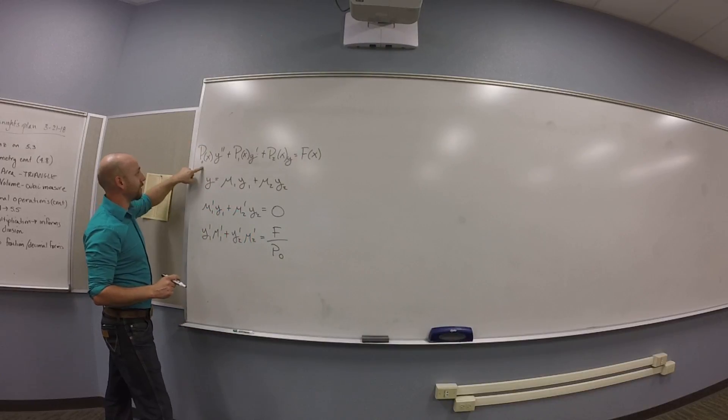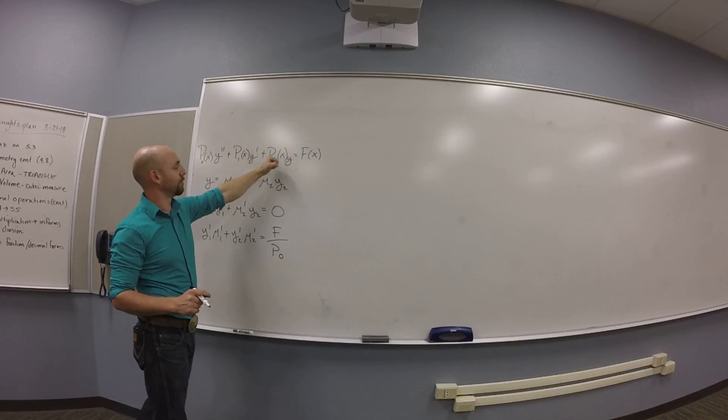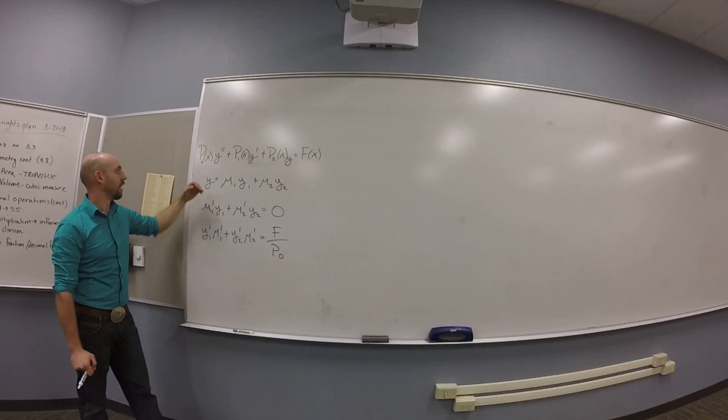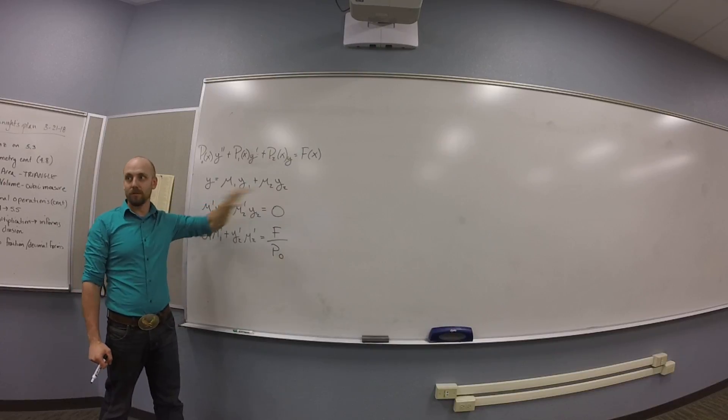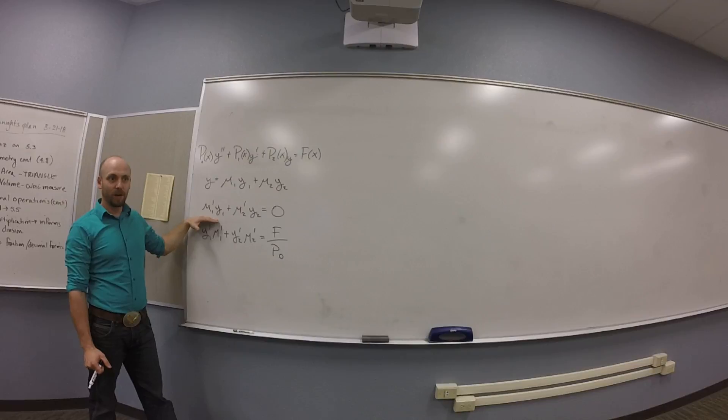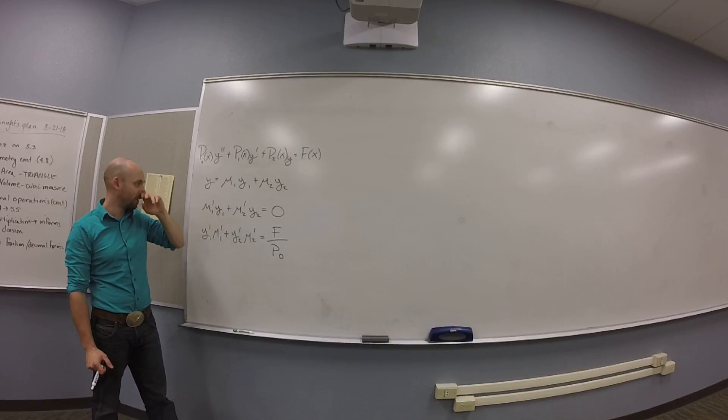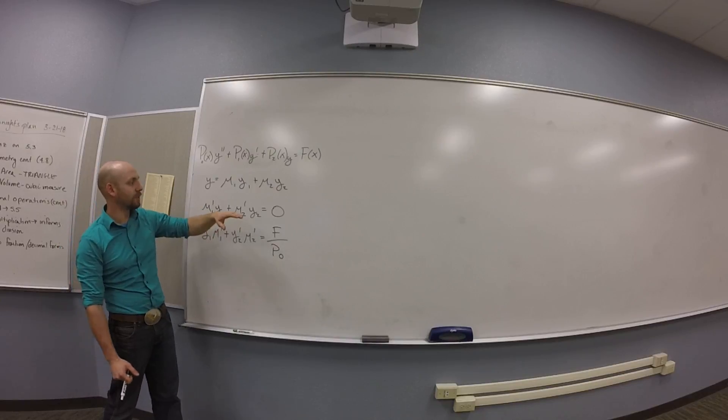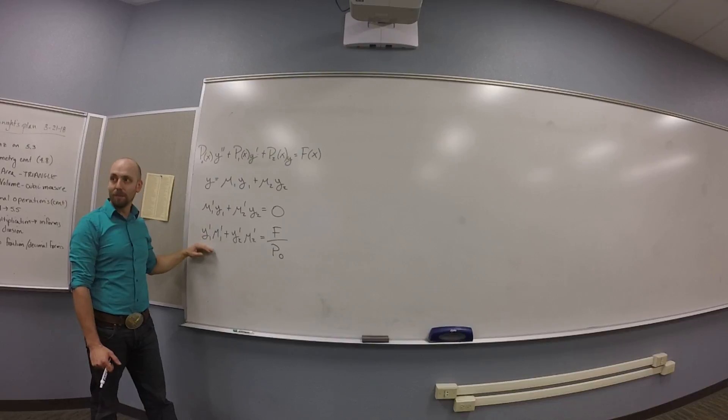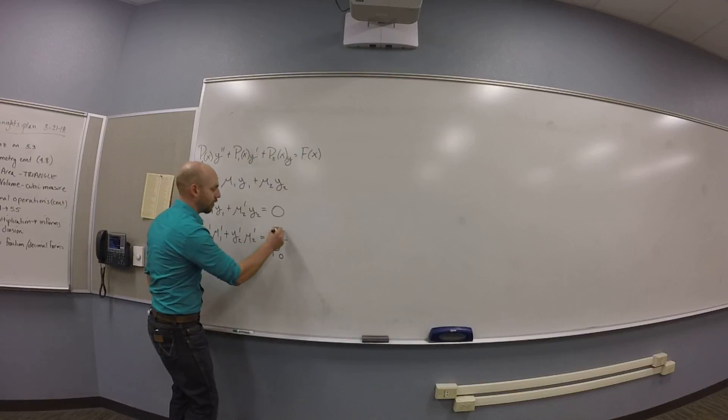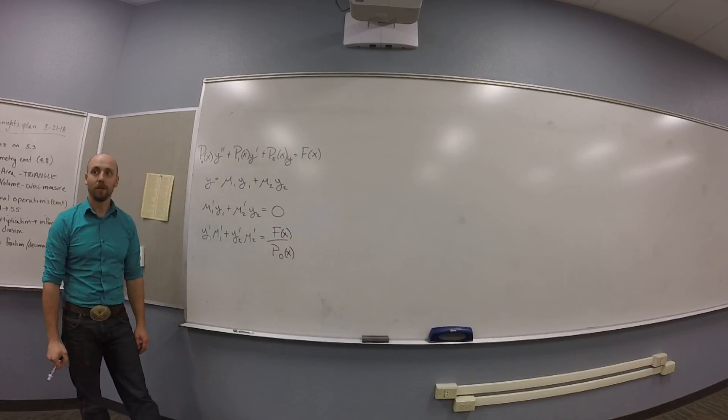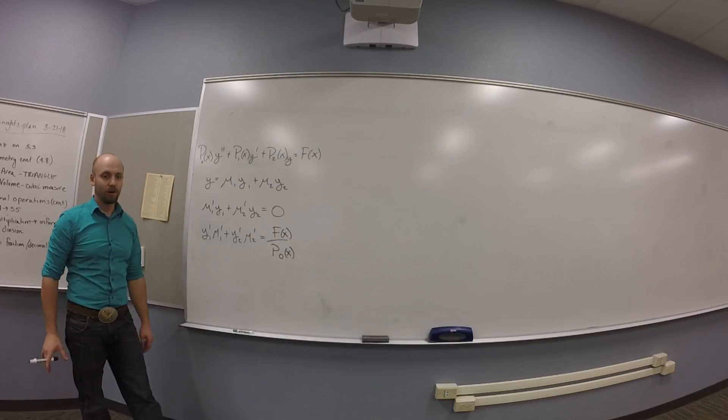So I have my original equation that's something like P0Y double prime plus P1Y prime plus P2Y is some forcing function F of X. I have my guess that I made, right? Y was mu1Y1 plus mu2Y2. Then I have my kind of make this into a reasonable sized project assumption, which is mu1 prime Y1 plus mu2 prime Y2 is 0. And then I have the thing I got out of manipulating all of that, which was Y1 prime mu1 prime plus Y2 prime mu2 prime is the forcing term over the coefficient on Y double prime. Cool? Put this on a note card or in your brain otherwise.